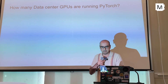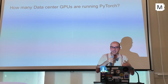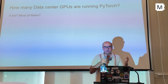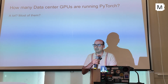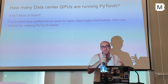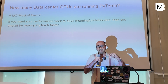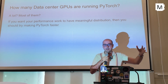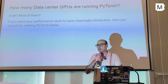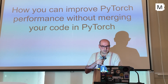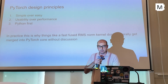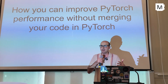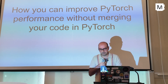Which brings me to the main point: if we were to speculate how many data center GPUs are running PyTorch, my thesis is it's either a lot or most of them. If you want your performance work to have meaningful distribution — basically accelerating things people care about — then you should try making PyTorch faster. The problem is we don't really merge things very easily in PyTorch, so how can you make PyTorch faster without merging code?